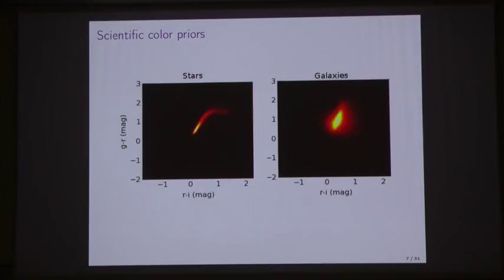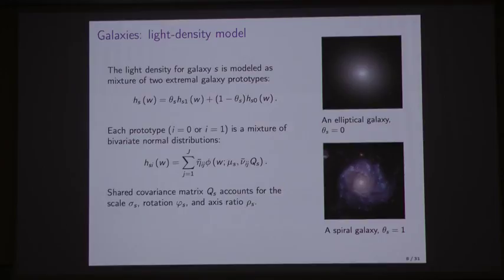As I mentioned, the galaxies, we have to model their spatial properties, and so we do that by interpolating between two prototypical galaxies. On the top right you'll see an elliptical galaxy, and on the bottom right you'll see a spiral galaxy. We model every galaxy as a mixture between those two prototypes, and the two prototypes are each represented as mixtures of normal distributions.